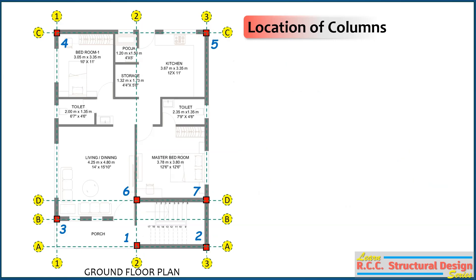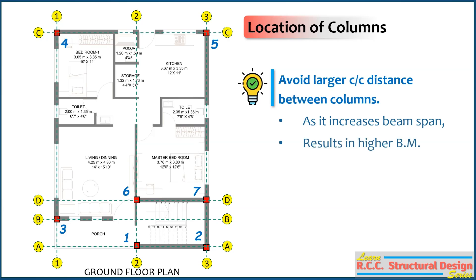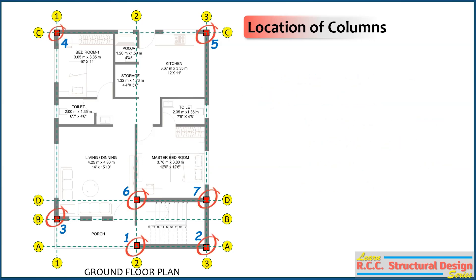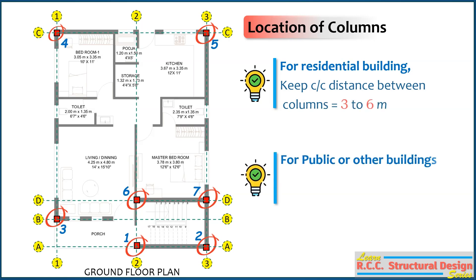The distance between columns also plays an important role. Preferably, we should try to avoid larger center-to-center distances between columns, as it increases the beam span, which results in higher bending moment. This also increases the size and reinforcement of beams and columns. In general, for residential buildings, the center-to-center distance between columns should be kept equal to 3m to 6m. For public buildings and special cases, it can be more or less than this.